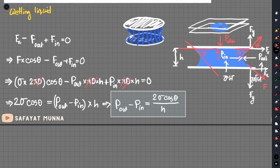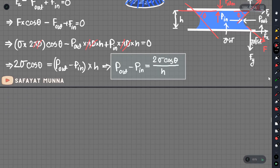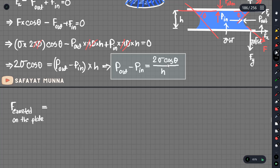At the bottom plate, the pressure difference must be sustained. Now we find the force exerted on the plates. The force equals the pressure difference multiplied by the surface area. Force = (p_out - p_in) × (π/4 × d²), which is 2 sigma cosθ over h multiplied by the cross-sectional area pi by 4 d squared.